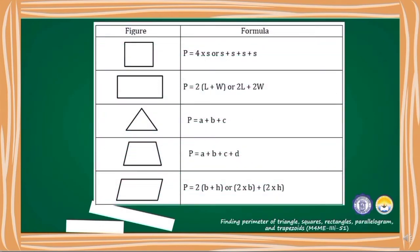Here is a table of formulas in finding the perimeter of different figures. For the square, we have P equals 4 times S or S plus S plus S plus S. For the rectangle, we have P equals 2 times L plus W or 2L plus 2W. For the triangle, we have P equals A plus B plus C. For the trapezoid, we have P equals A plus B plus C plus D. And for the parallelogram, we have P equals 2 times B plus H or 2B plus 2H.